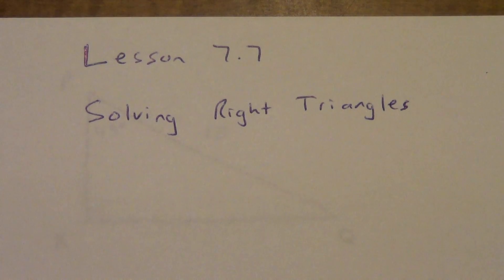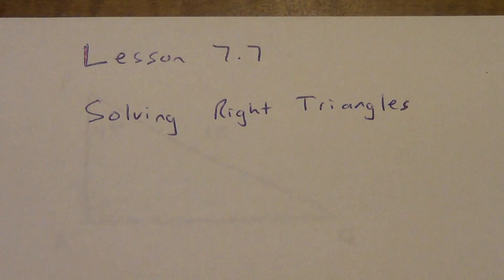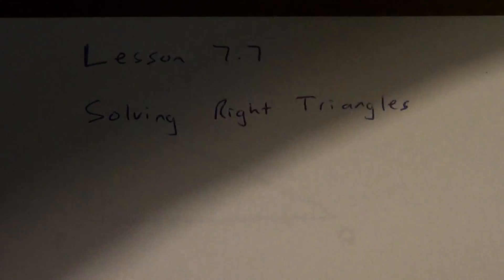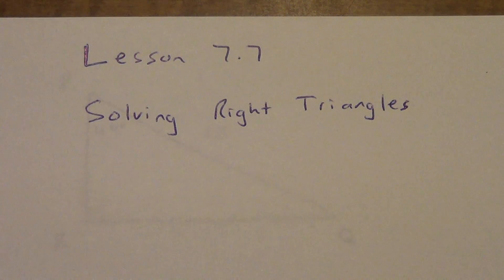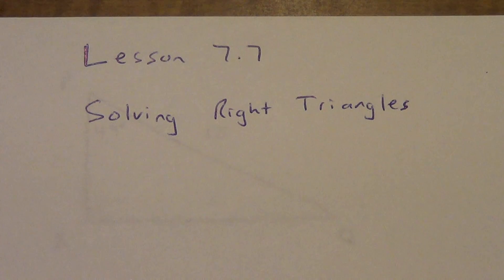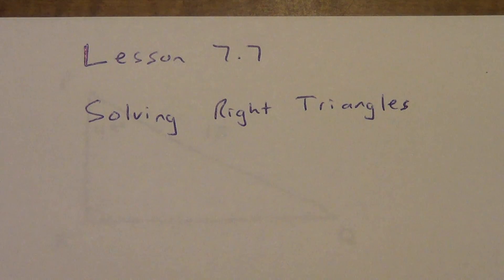Okay, here we are. Lesson 7.7, the last lesson in Chapter 7. We're going to teach you how to do what is called solving a right triangle. All I mean when they say solve a right triangle is to find every single missing piece of that right triangle.